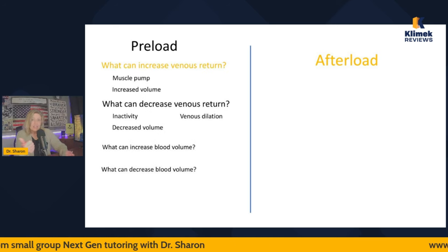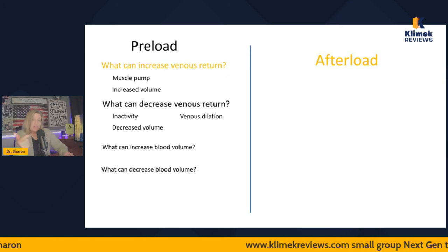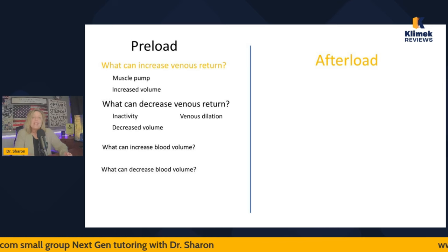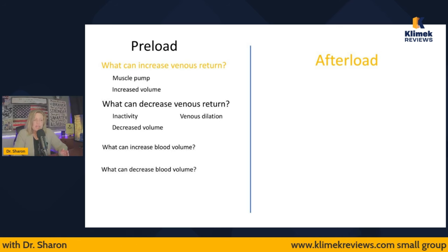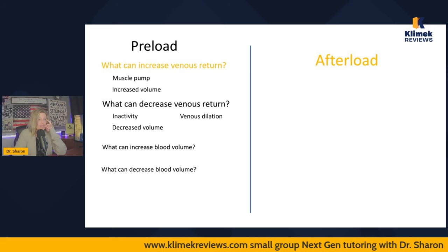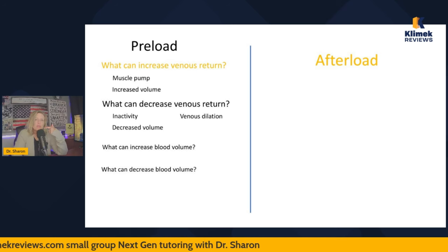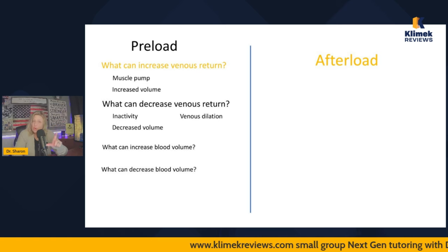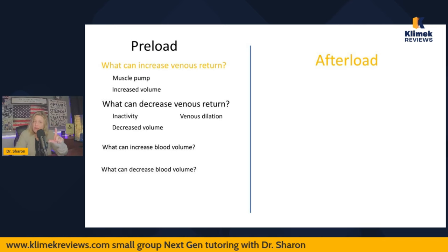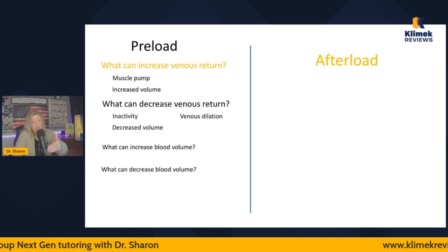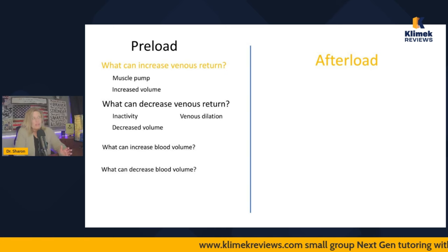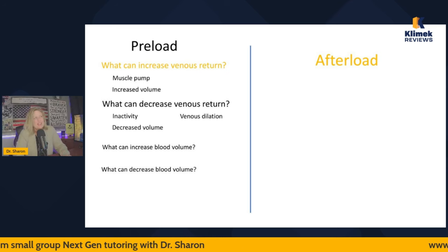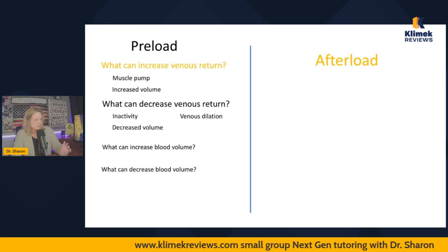Decreased volume from dehydration or hemorrhage can reduce preload. Diuresing with a lot of diuretics can also decrease preload, as can venous dilation. The main drug that causes significant venous dilation is nitroglycerin — sublingual nitro or nitroprusside. Anything that starts with 'nitro' causes venous dilation, which decreases preload, decreases end diastolic volume, decreases the volume to be ejected, and decreases cardiac output. This decreases the work of the heart, decreases oxygen demand, and decreases angina. You can watch my acute coronary syndrome video for more on that.